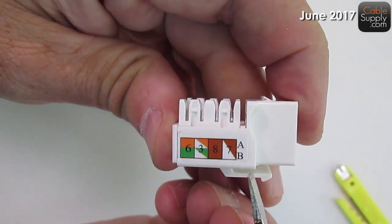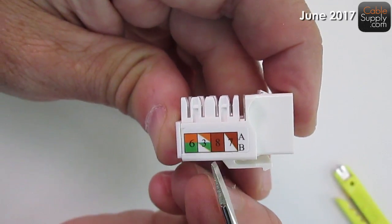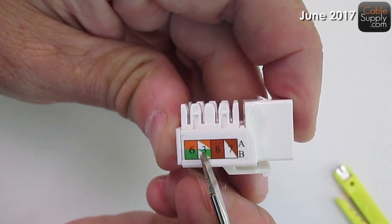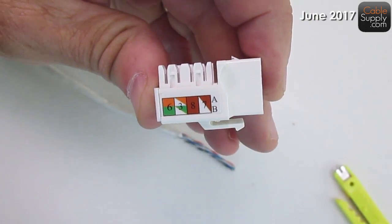On the other side, the B standard is going to be brown, brown white, brown, green, white, and green. So that's the standard. That's how you're going to punch them down.